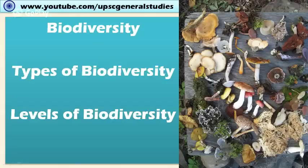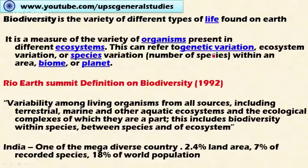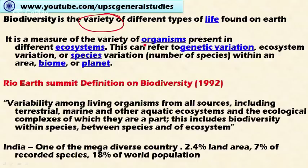Welcome friends. In this video let's discuss biodiversity, levels of biodiversity, and types of biodiversity. Biodiversity is the variety of different types of life found on the earth. It is a measure of variety of organisms present in different ecosystems — not confined to only a single ecosystem. This can refer to genetic variation, ecosystem variation, or species variation within an area, biome, or planet.